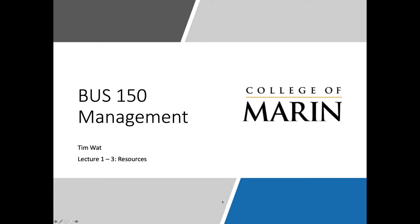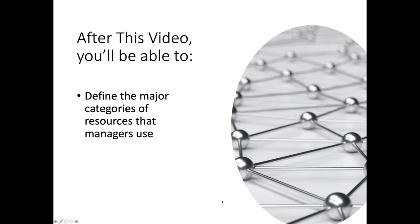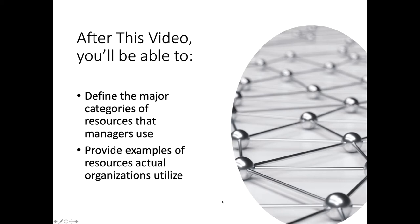Welcome back to Business 150, Introduction to Management. This is our third video in module one, our look at exactly what management is. As you can see from this title slide, we're looking at the topic of resources — what kinds or categories of resources organizations and managers use to accomplish organizational goals. At the end of this video, you should be able to do two things: define the major categories of resources that managers use, and provide examples of resources actual organizations utilize.